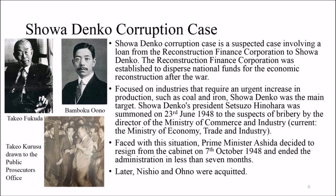Showa Denko's President Setsuzo Hinohara was summoned on 23rd June 1948 as a suspect for bribery of a Director of the Ministry of Commerce and Industry. In September 1948, Takeo Fukuda, the General Director of the Ministry of Finance, and Banboku Ono, the advisor of the Democratic Party, were arrested for bribery. Takeo Kurusu, Secretary of the headquarters for economic stabilization, was arrested on 30th September, and former Deputy Prime Minister Suohiro Nishio was arrested on 6th October. Faced with this situation, Prime Minister Ashida resigned on 7th October 1948, ending the administration in less than seven months. Later, Nishio and Ono were acquitted.